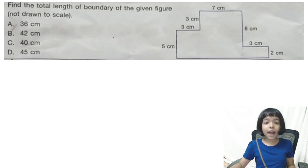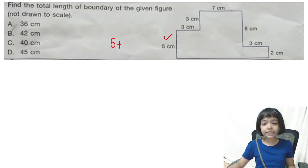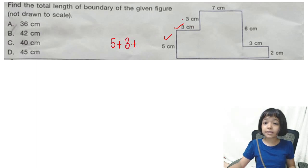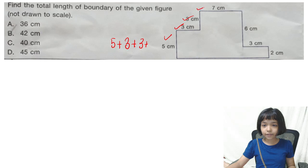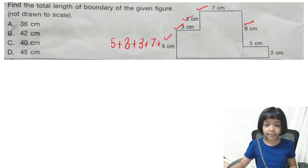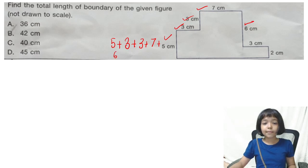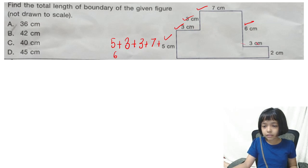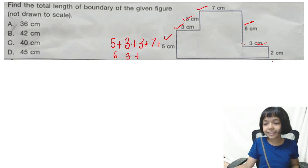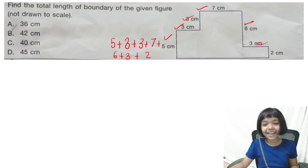Here is first 5 cm, plus 5 cm, plus 3 cm, plus 3 cm, plus again 3 cm, plus 7 cm, plus 6 cm, and here is 3 cm, and this is 2 cm. I forgot to give the plus signs.